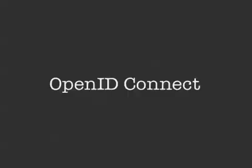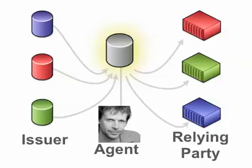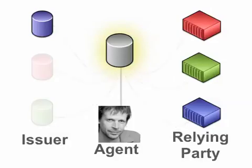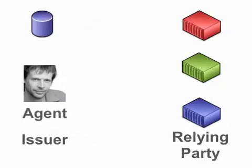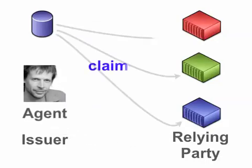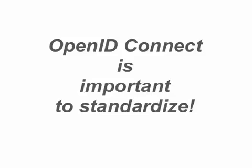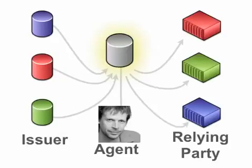So let's look at OpenID Connect and how it compares to user-centric architecture. In OpenID Connect, there's only one issuer that can be operating at a time, and that issuer is also acting as the agent for the user. You can take the claims from that one issuer to any relying party that trusts that issuer. This is creating an identity service, and OpenID Connect is an important technology to standardize. But let's not be mistaken — it is not a user-centric architecture.